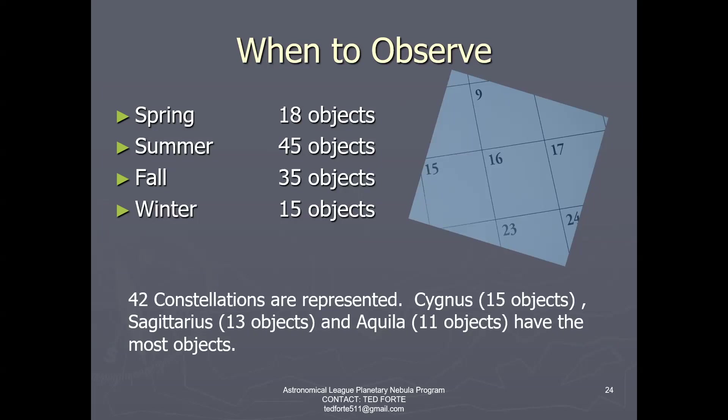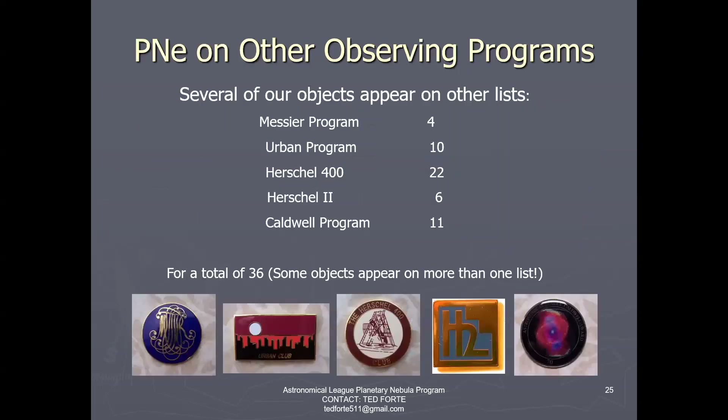42 constellations are represented in the original 110 objects in the program, with most of them being in Cygnus, Sagittarius, and Aquila. If you're used to doing other programs, you'll find a lot of crossovers — 36 objects on our original 110 appear on other lists, and some appear on more than one. The four Messier planetary nebulae are in our program. We share 10 objects with the Urban program. The Herschel 400 has 22 of the objects on our list, and six more on Herschel 2. William Herschel discovered a total of 33 planetary nebulae and 28 of them are on our list. The Caldwell program has 11 objects shared with us.